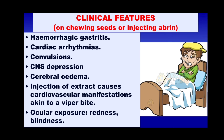On exposure — when somebody chews on the seeds, when seeds are crushed and swallowed, or if Abrin is extracted and injected — the following clinical features occur: gastritis, which is usually hemorrhagic and can be very severe, sometimes in the form of gastroenteritis. There can also be cardiac arrhythmias, sometimes convulsions with CNS depression, and cerebral edema. If the extract, that is Abrin, is injected, it can cause cardiovascular manifestations very similar to those in a viper bite. Ocular exposure to the active principle can cause redness — conjunctivitis — sometimes leading to blindness. Overall, this is a really deadly toxin.